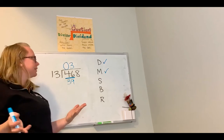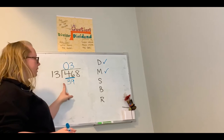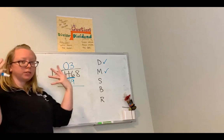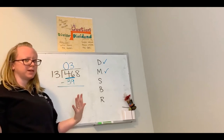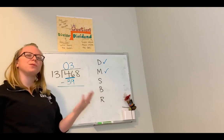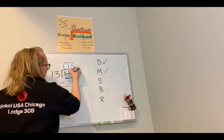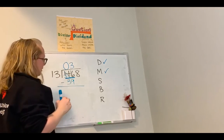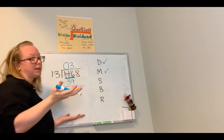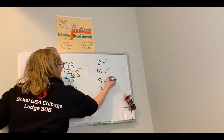The next step is subtraction: I subtract 46 minus 39. Starting with 6 minus 9 — I can't do that, so I borrow from my next door neighbor. My 4 becomes a 3 and my 6 becomes a 16. 16 minus 9 is 7, and 3 minus 3 is 0. My subtraction step is complete.